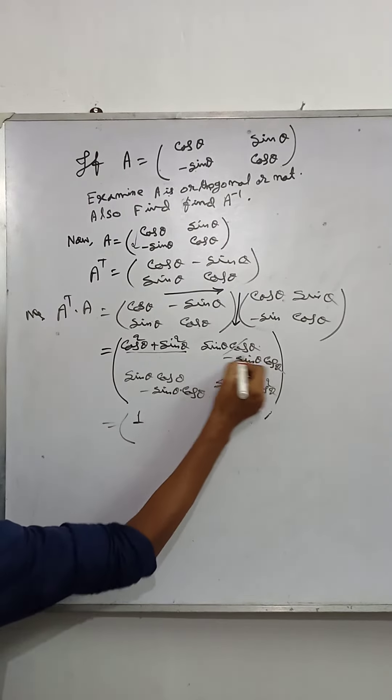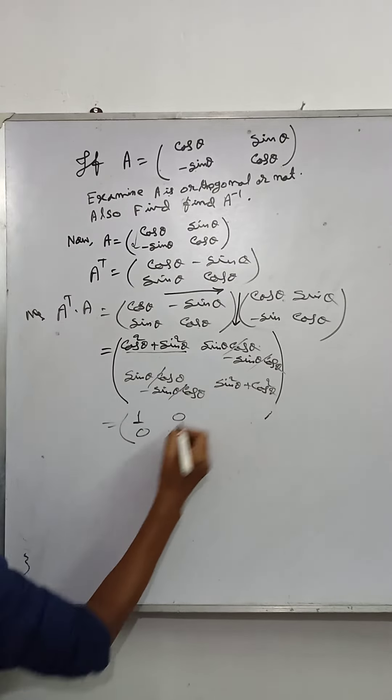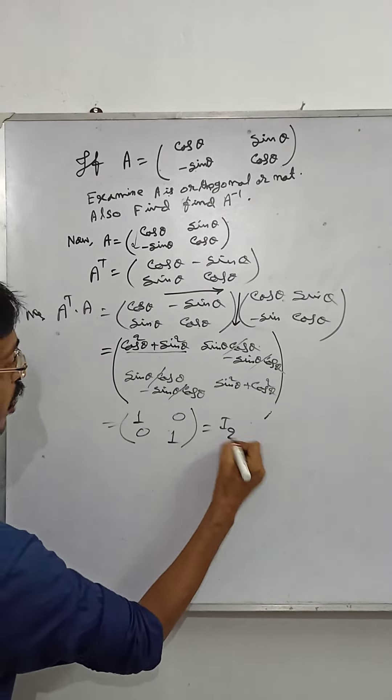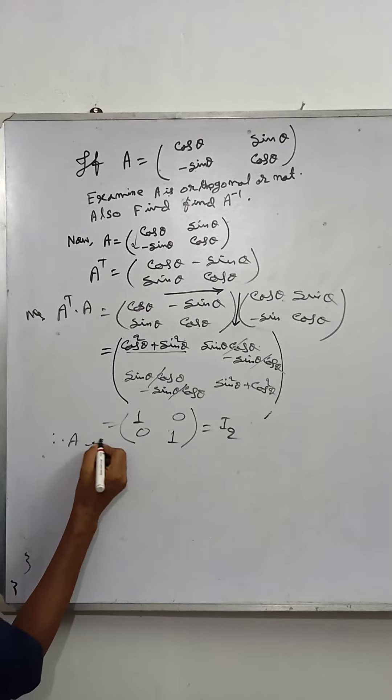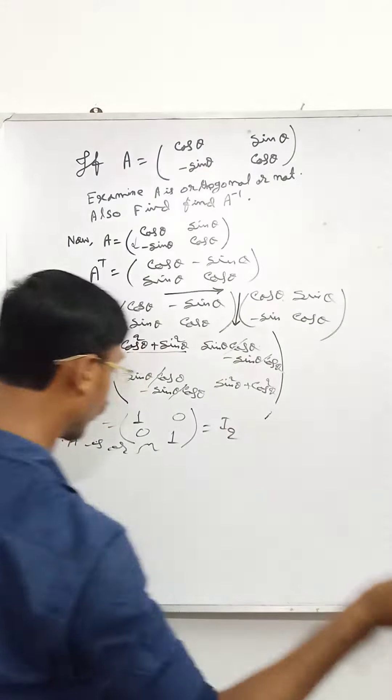This part is cancellation, equals 0. This part is 0, cancellation. This part is 1. That means this is I₂, the identity matrix. Therefore, A is an orthogonal matrix. We know the properties of orthogonal matrices.